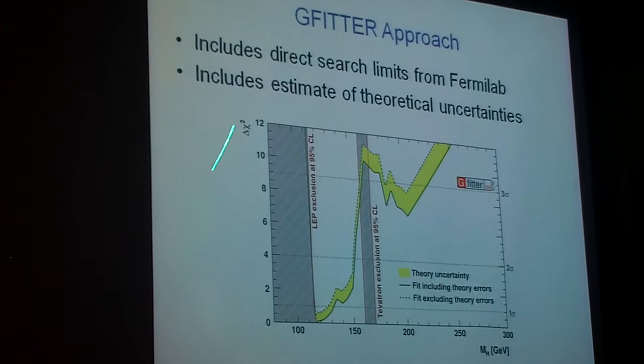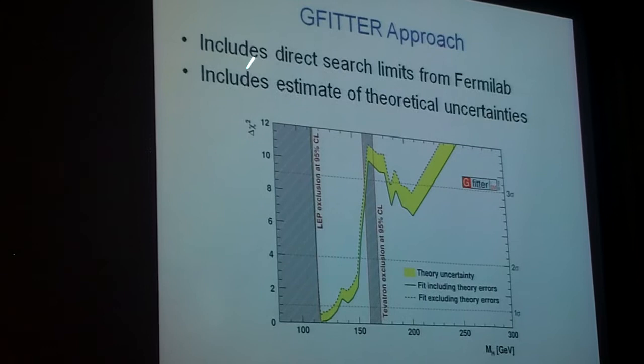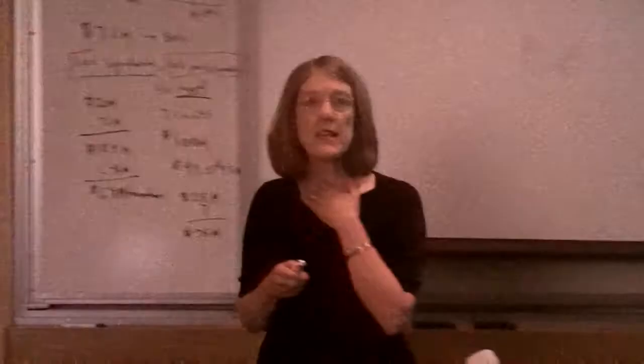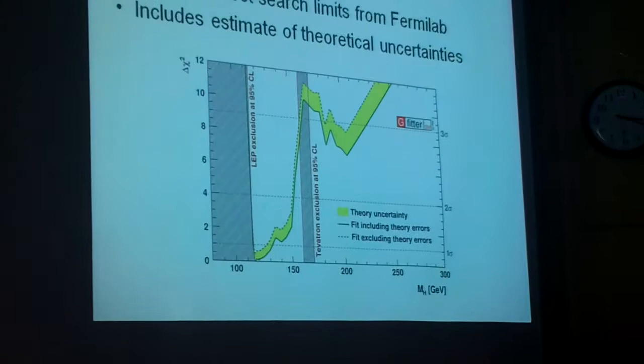But what they have done is they've included direct search limits, which we'll hear about at the end of the afternoon. They've included those limits in their fit, and that's what makes this kind of jagged here. You can see that the limits from Fermilab are actually changing these indirect limits. The other thing they've done is they've included theoretical uncertainties, and you can see there's a band on this. But nonetheless, the bottom line is here's the three sigma limit right here, and it's about 160, 170.